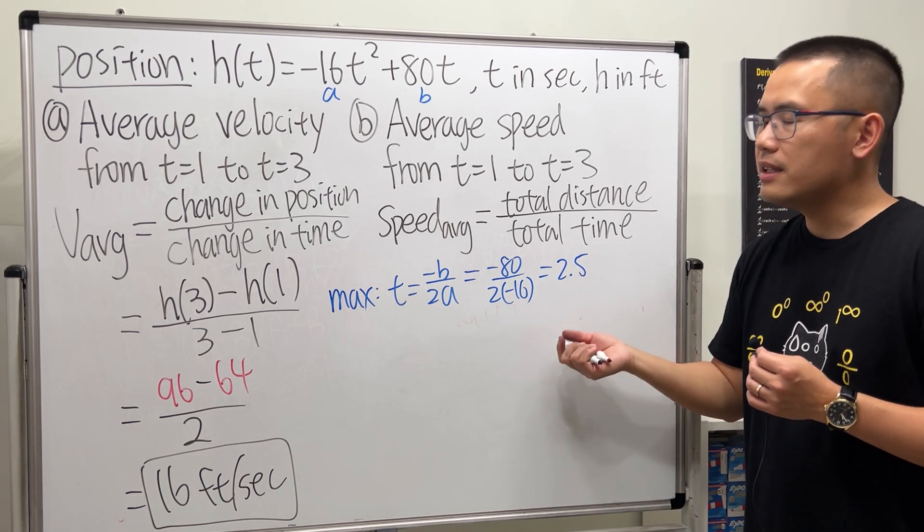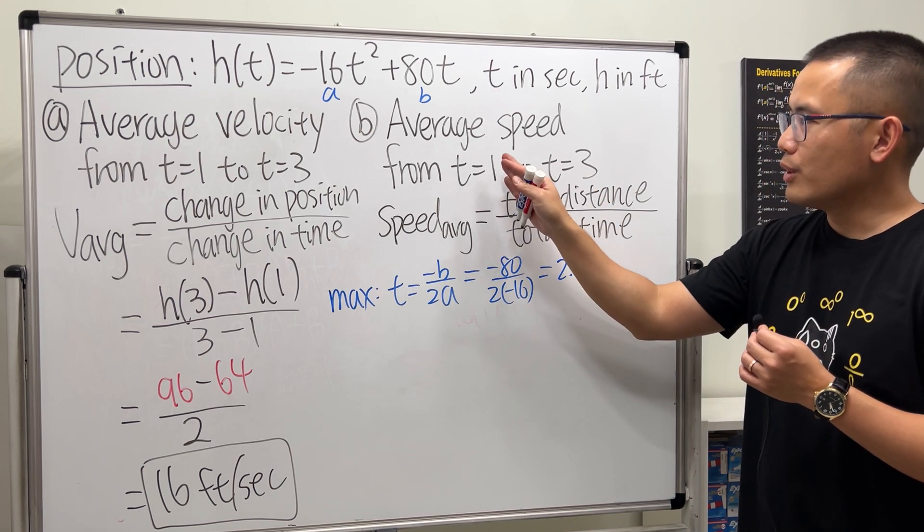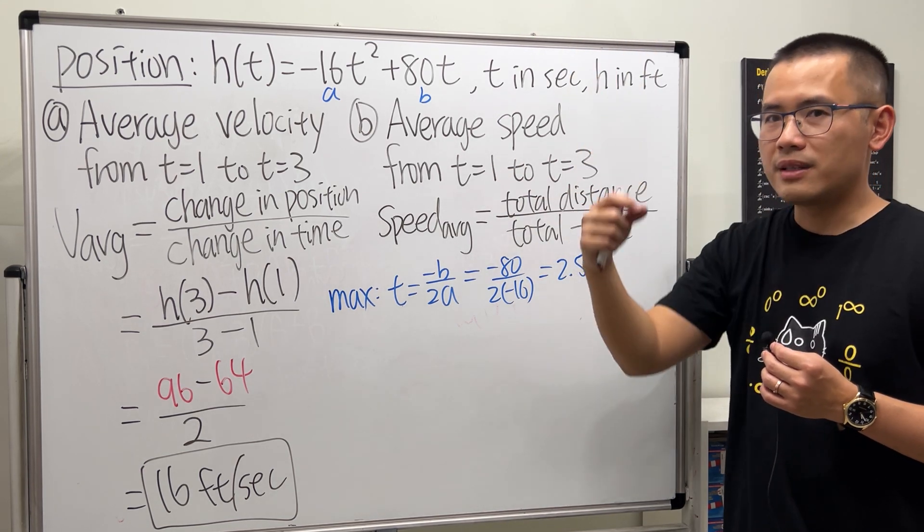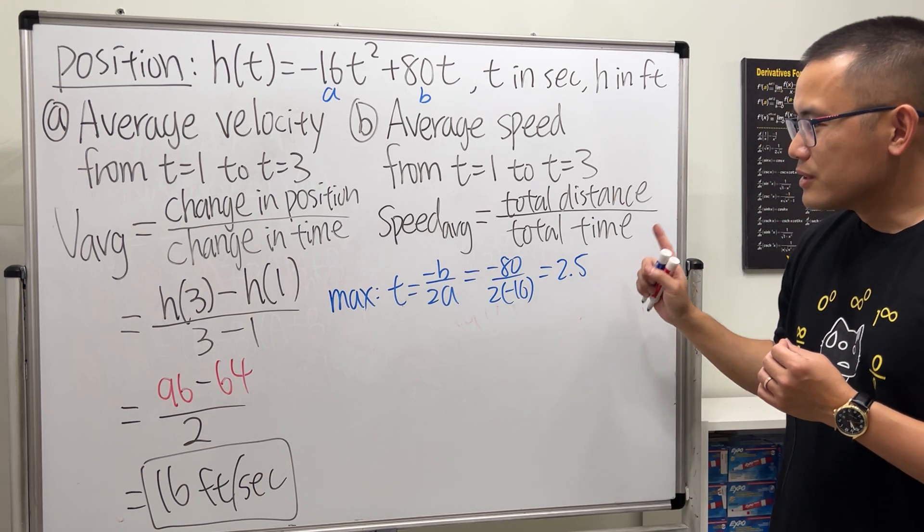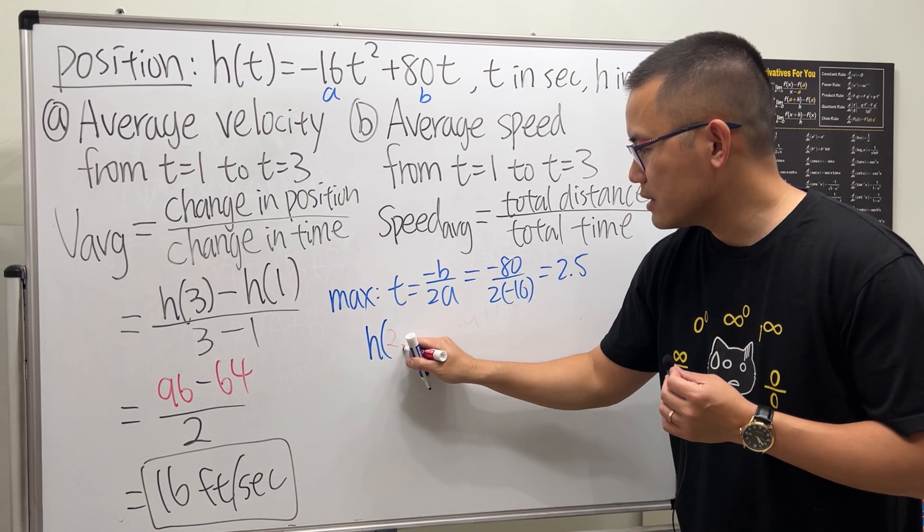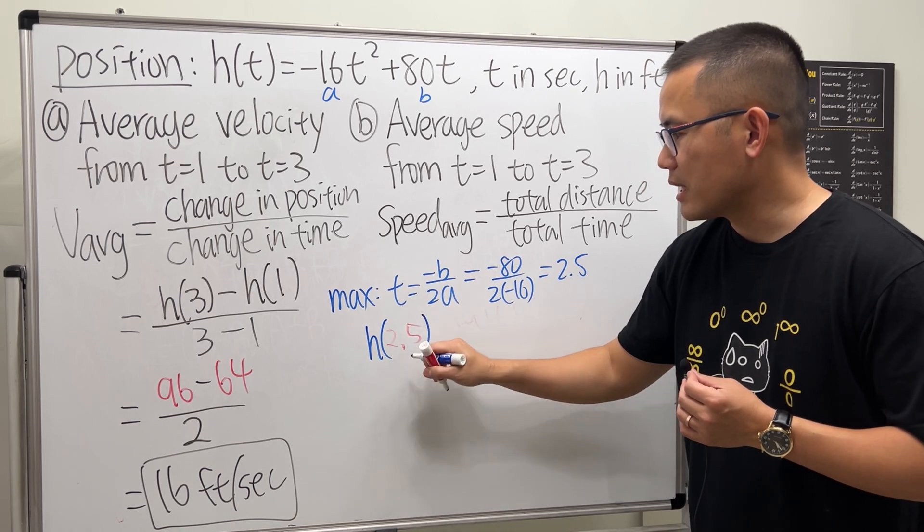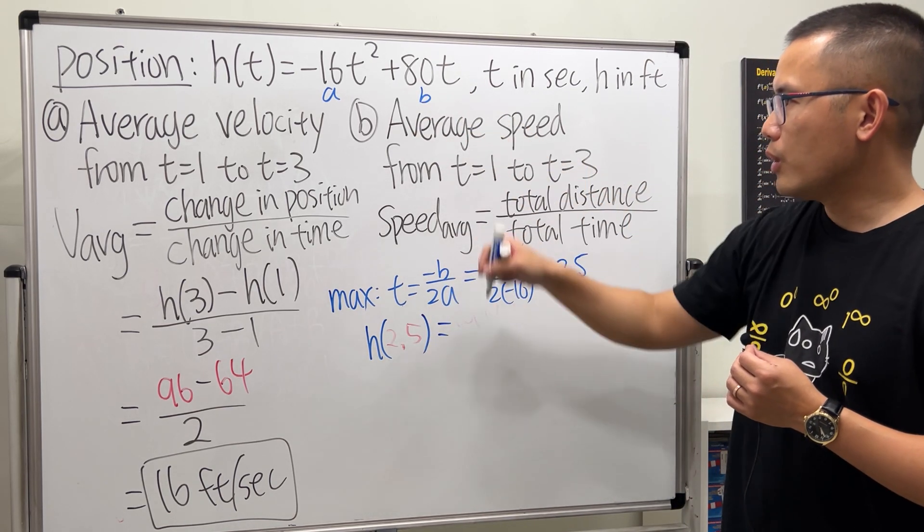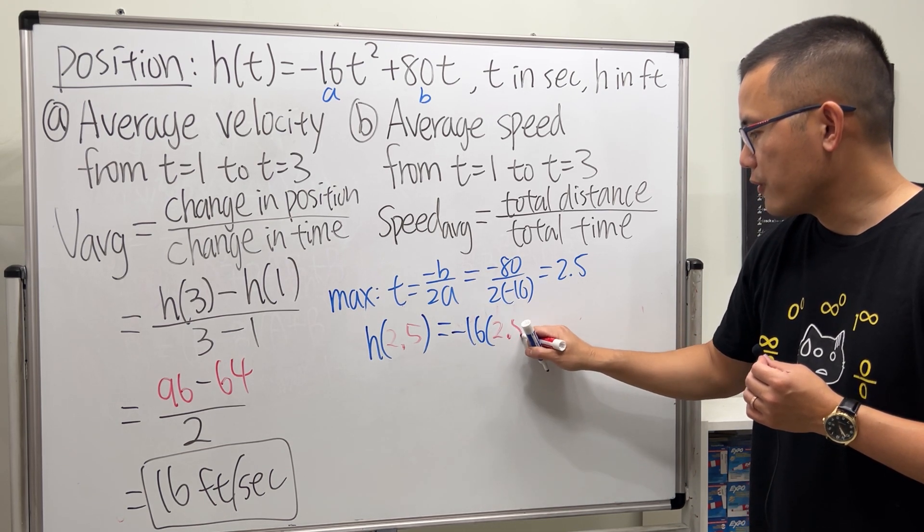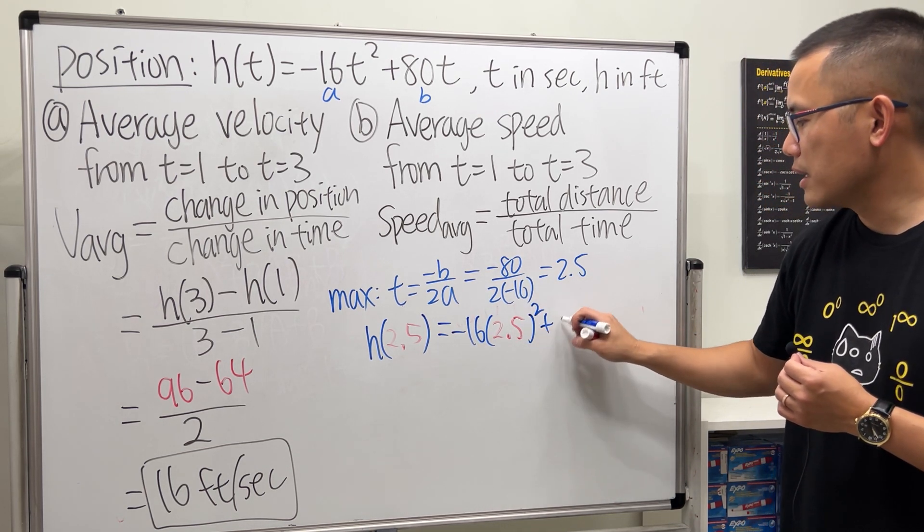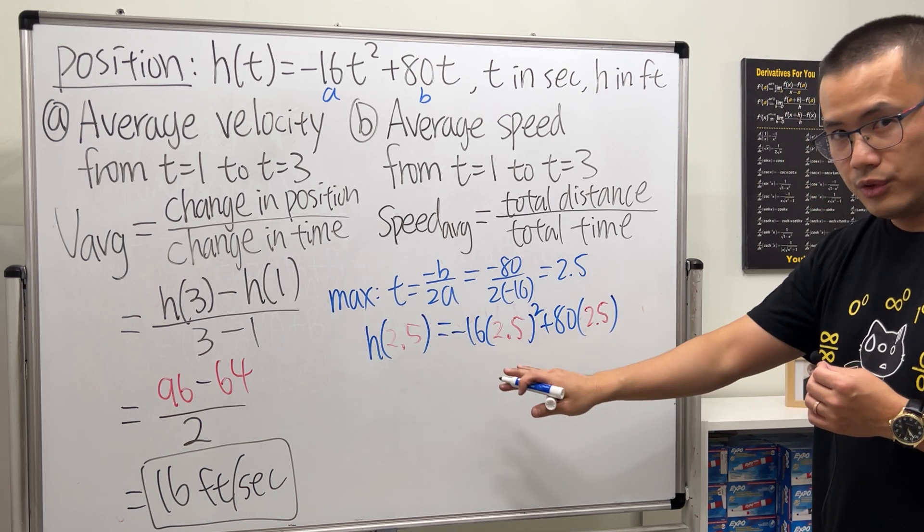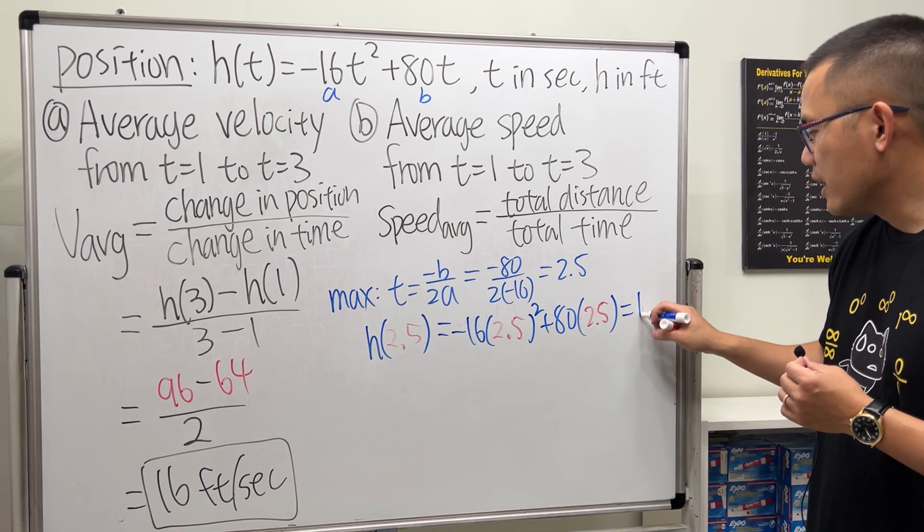So we will have to figure out what h(2.5) is—that will give us the maximum height. So put 2.5 into all the t's, so we get negative 16 times 2.5 squared plus 80 times 2.5. Use a calculator, work that out, you will get 100.